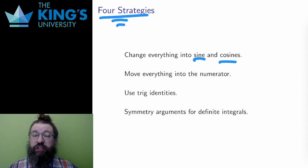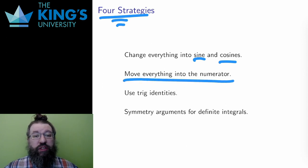Sometimes, instead of changing to sines and cosines, it is more helpful to eliminate denominators. If the integral only involves trig functions, this can always be done using the definitions. If there is a sine in the denominator, I can write it in the numerator as a cosecant, since cosecant is, by definition, 1 over sine, and likewise for other trig denominators.